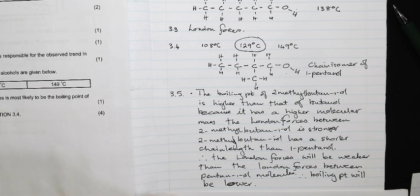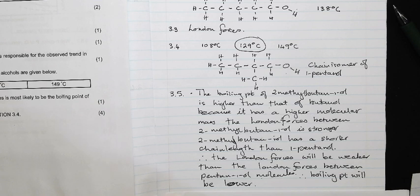I know in class we explain the energy required, but in the memo nothing about energy required was mentioned. So for 4 marks you have to compare the butanol and the 2-methylbutanol molecular mass and their London forces, and then for another 2 marks you need to compare the 2-methylbutanol to the pentanol boiling points.